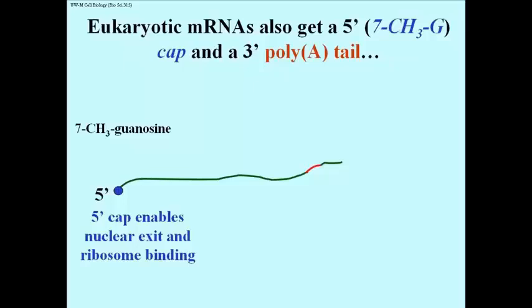The 5' cap is a methylated guanosine nucleotide. This cap helps move mRNA out of the nucleus and into the cytoplasm.